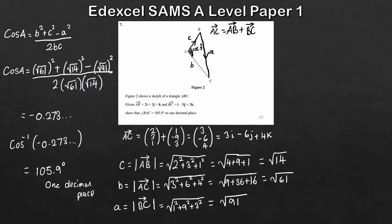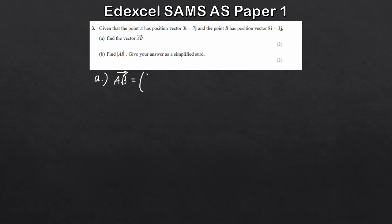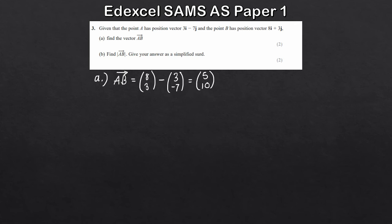And there we go — a bit of a problem-solving question, quite common on the new spec. Then finally the last question, another easy one to finish with. We've got two points A and B with their respective position vectors. Part A: find the vector AB — that's the position vector of B minus the position vector of A. So that's A 3 minus 3 minus 7. The only thing to be careful of is a minus of a minus. A minus 3 is 5, and 3 minus minus 7 is 10, giving us 5i plus 10j.